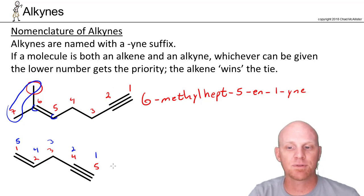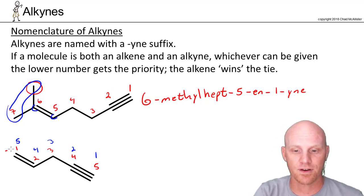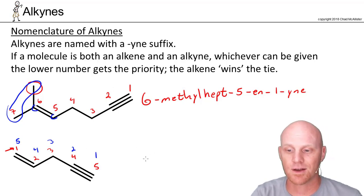So neither one has any particular priority, whichever one you can get the lower number to. But when there is a tie, the rule is just the alkene wins. So we're going to go with the numbering in red here. In this case, 5-carbon chain. And again, with two functional groups showing up in the parent chain, you've got to put your chain locators in the middle of the word. Five carbons is pent.